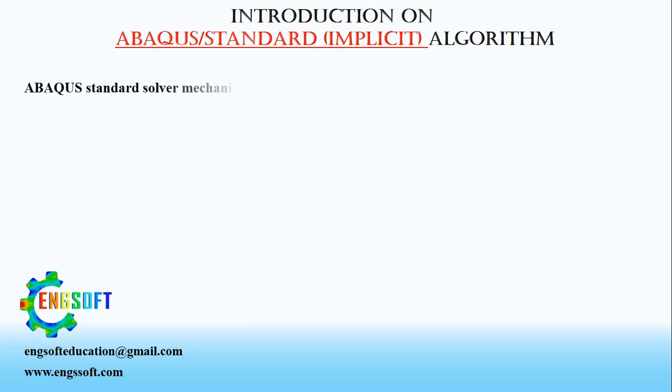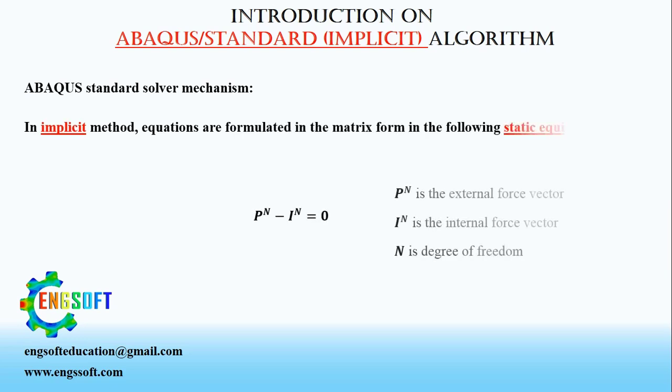In Implicit Solver algorithm, equations are formulated in the matrix form in static equilibrium, where P is the external force vector and I is the internal force vector and N is the number of equations. Therefore, whenever the problem is in static equilibrium, the difference between external and internal force vectors is equal to zero.